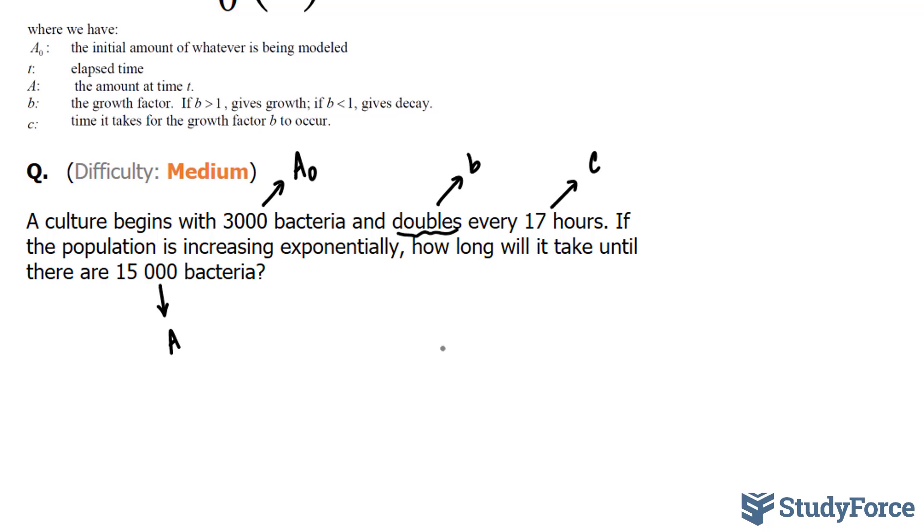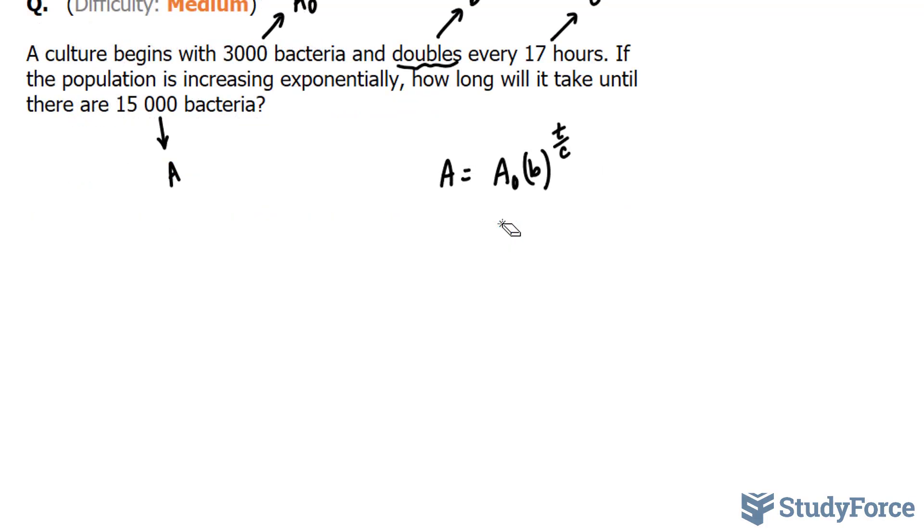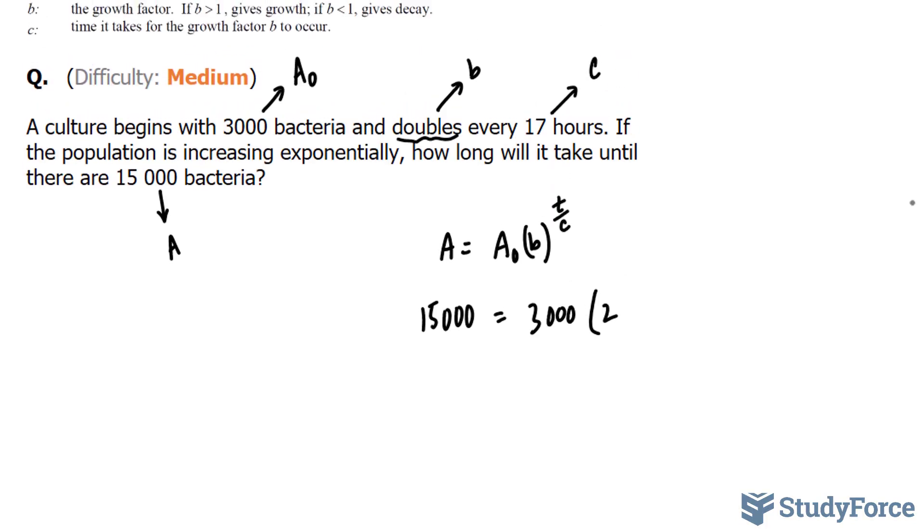So let's write this all out. A is equal to A initial b to the power of t over c. A final is 15,000 is equal to A initial of 3,000 times b, which is 2, since it's being doubled, to the power of t over 17.